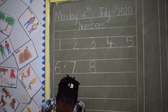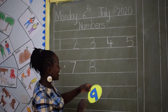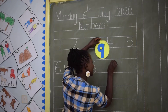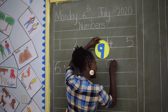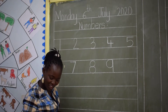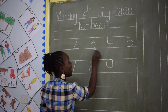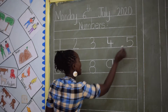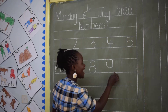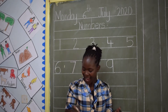Our next number is number 9. Let me look for number 9 here. And here, children, is number 9. This is how we write number 9. Yes, this is number 9. Can we count again? Beautiful, children. 1, 2, 3, 4, 5, 6, 7, 8, 9, and 10.